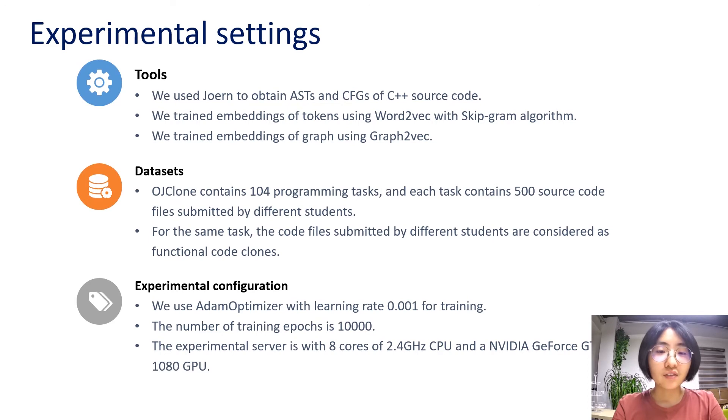In order to verify the effectiveness of our approach, we designed a series of research questions, and then we try to answer them through experiments. This page shows our experimental settings, where I want to highlight the dataset we use, OJ clone. It contains 104 programming tasks, and each task contains 500 source code files submitted by different students. For the same task, the code files submitted by different students are considered as functional code clones. Such a dataset is very suitable for functional clone detection, because the structure of the code must be different when different programmers implement the same functionality. This dataset is also widely used in the research of existing clone detection, which is convenient for us to compare with other tools.